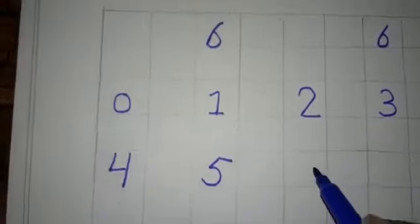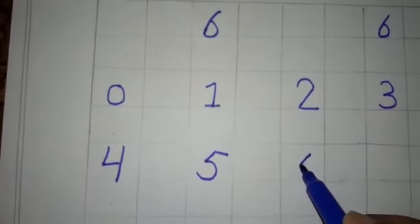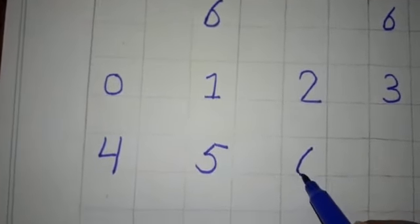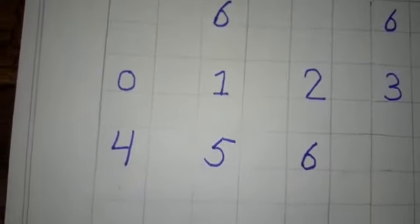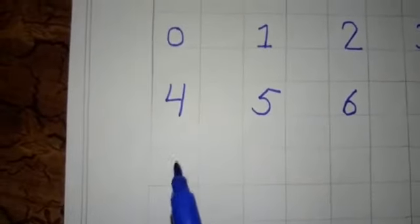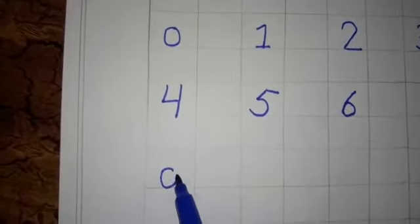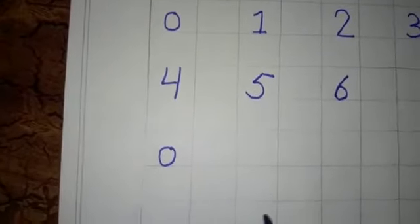Number 6. So, this is number 6. I write here again. Make a circle. This is 0.